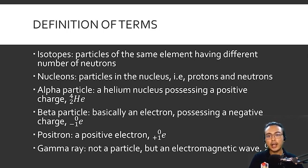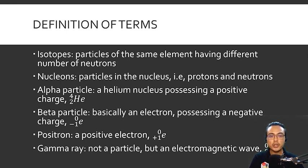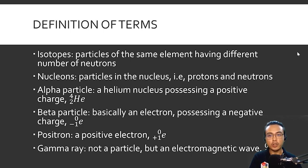An alpha particle is a helium nucleus possessing a positive charge. We represent alpha particles in nuclear reactions as helium with an atomic number of 2 and a mass number of 4, or alternatively as the Greek letter alpha.